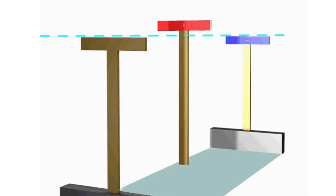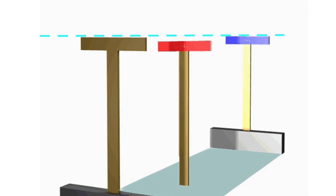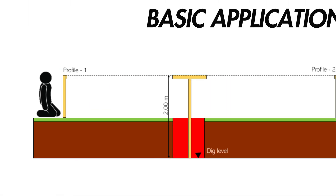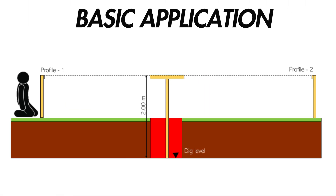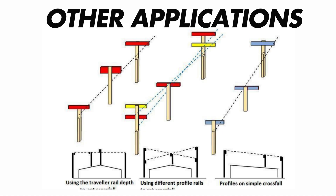As you can see here, this is a visual aid of the line of sight between the two profiles and the traveller. It is very important to look through the three and try to get down at the right level — this will help to be as accurate as possible. Profiles can be used very easily on flat excavations but can also be applied in more complicated scenarios.